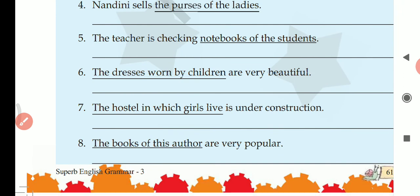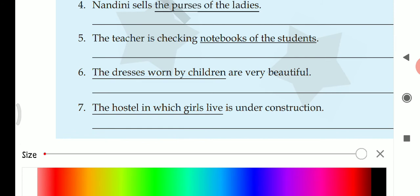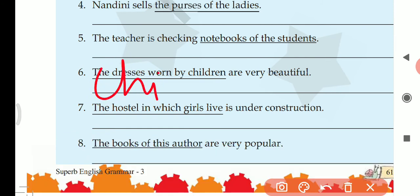Next, question six: the dresses worn by children are very beautiful. Children is plural but it is not ending in S. So after children, give an apostrophe and then S — children's dresses are very beautiful.